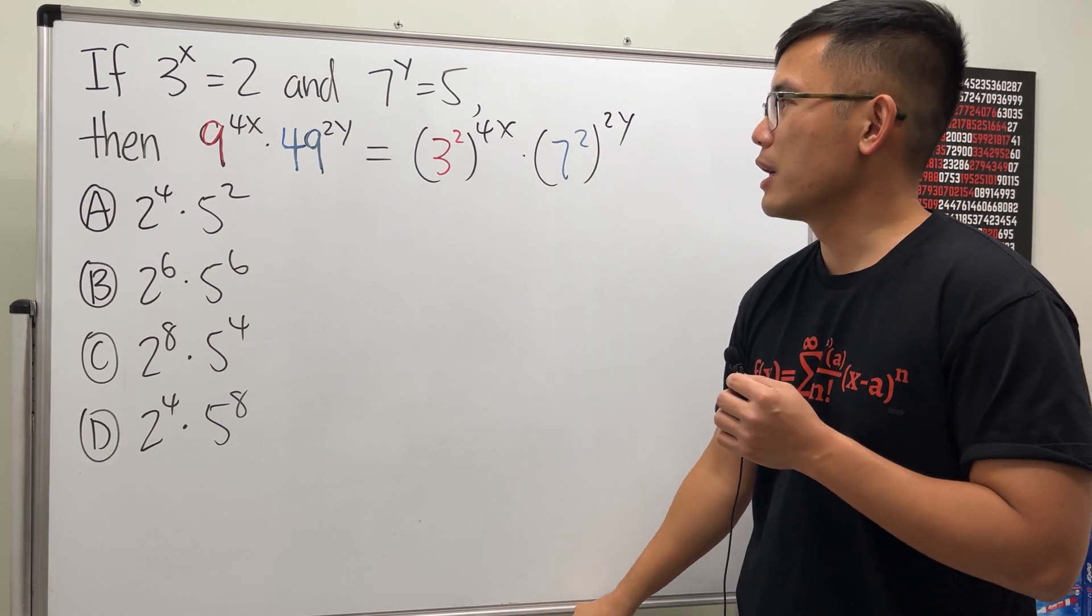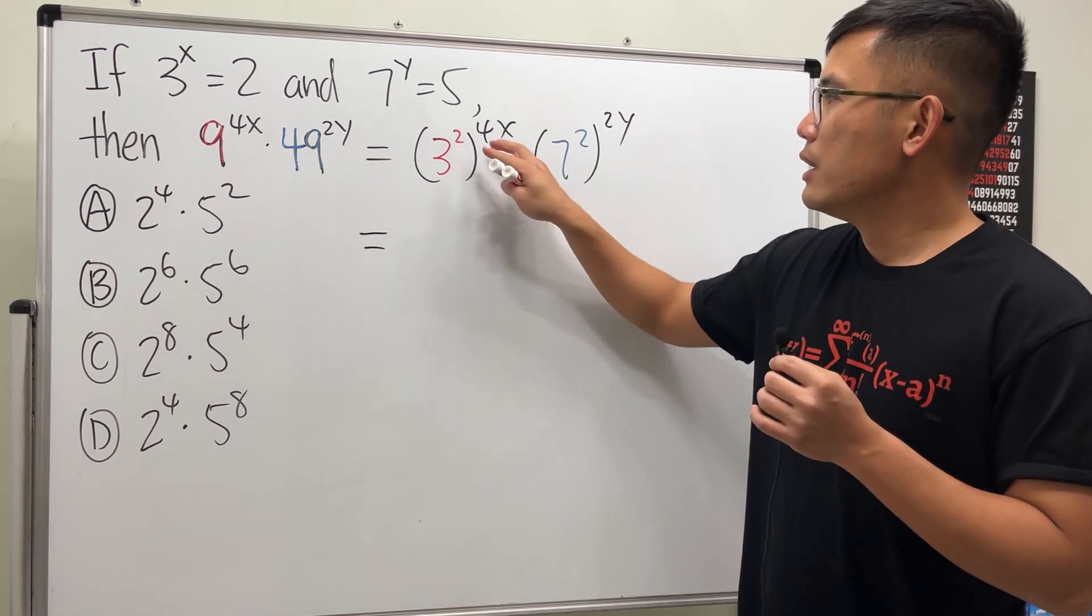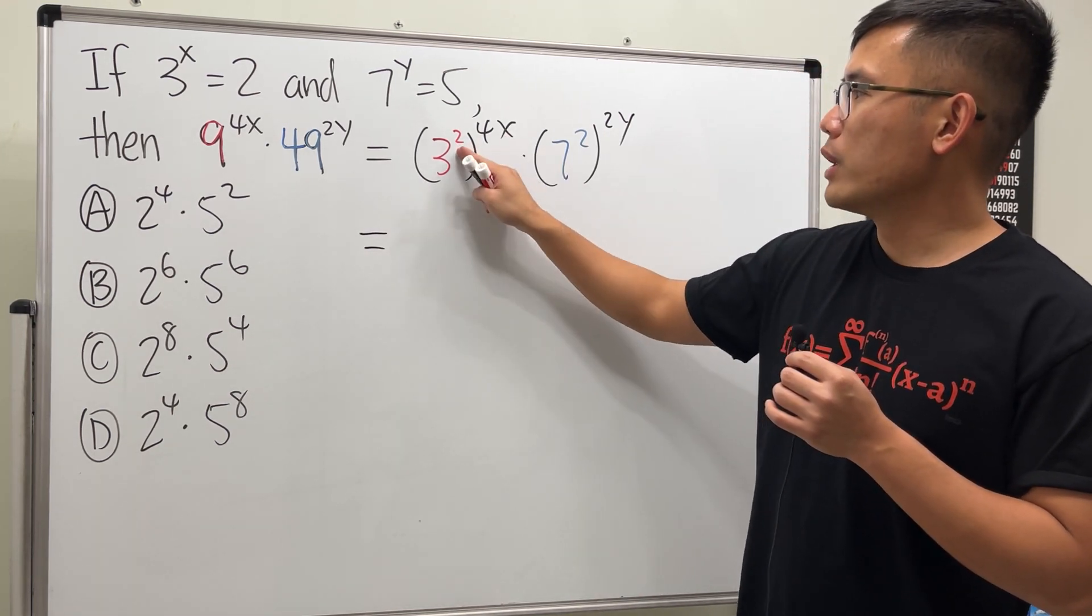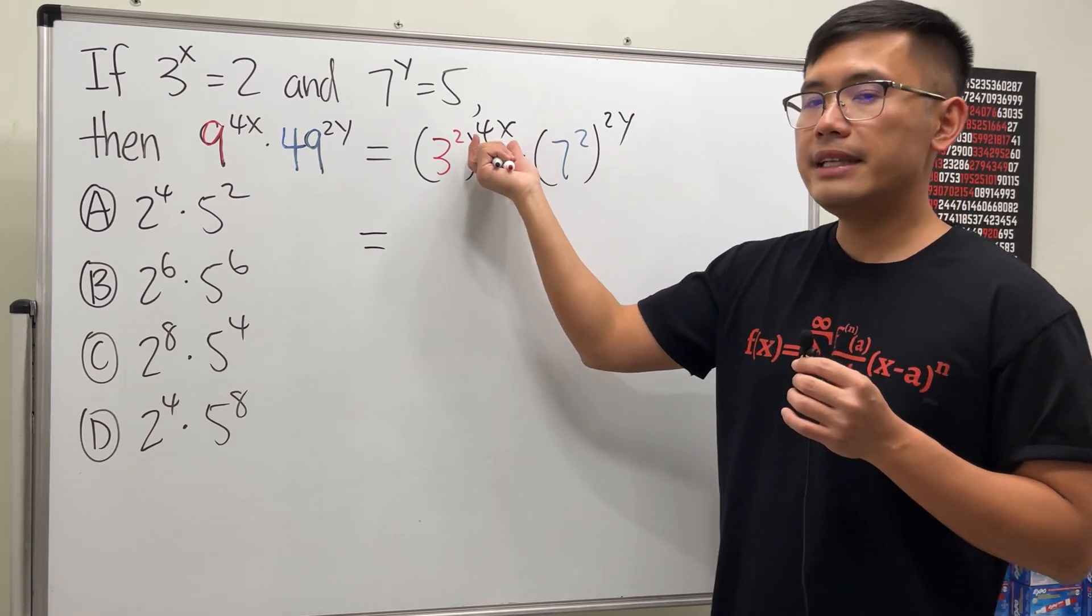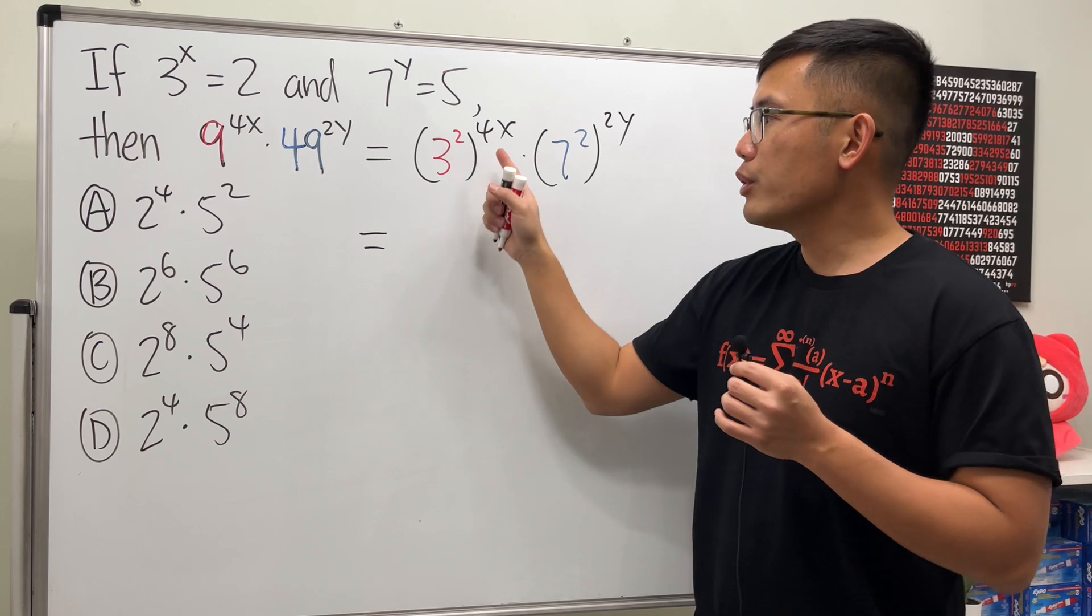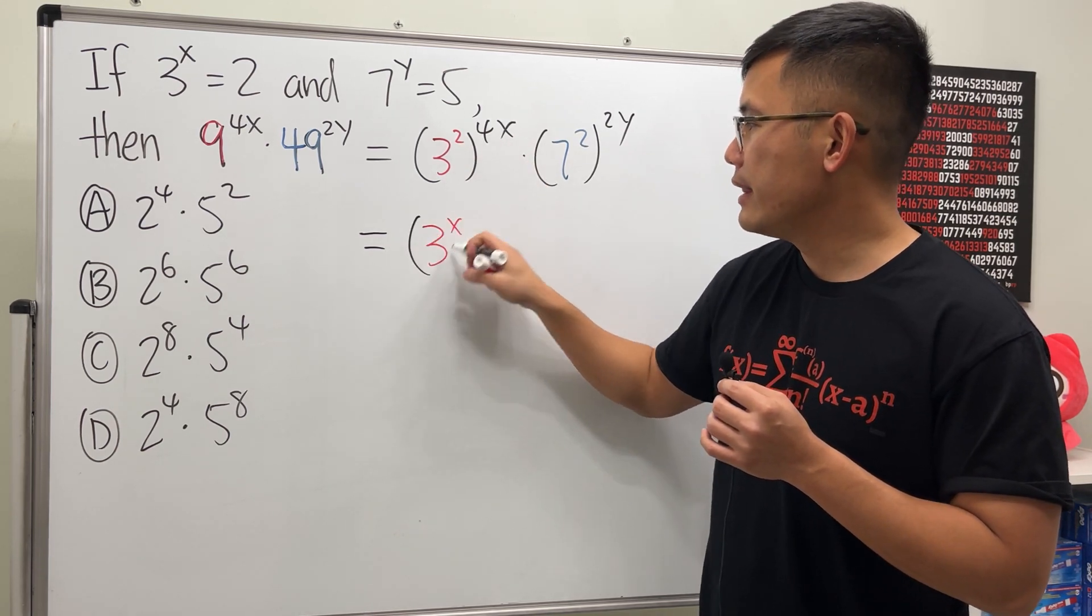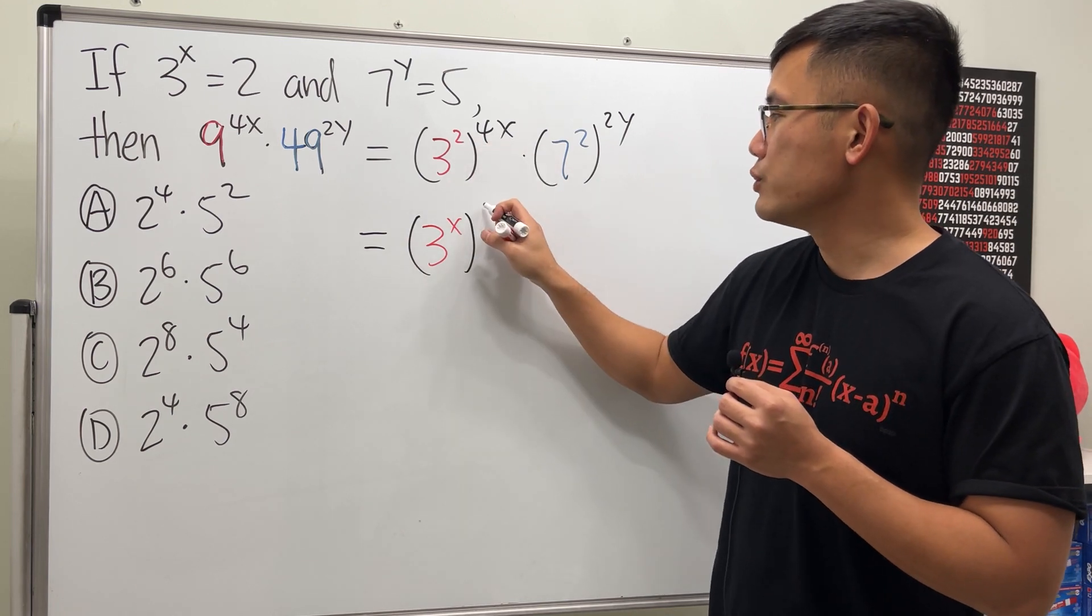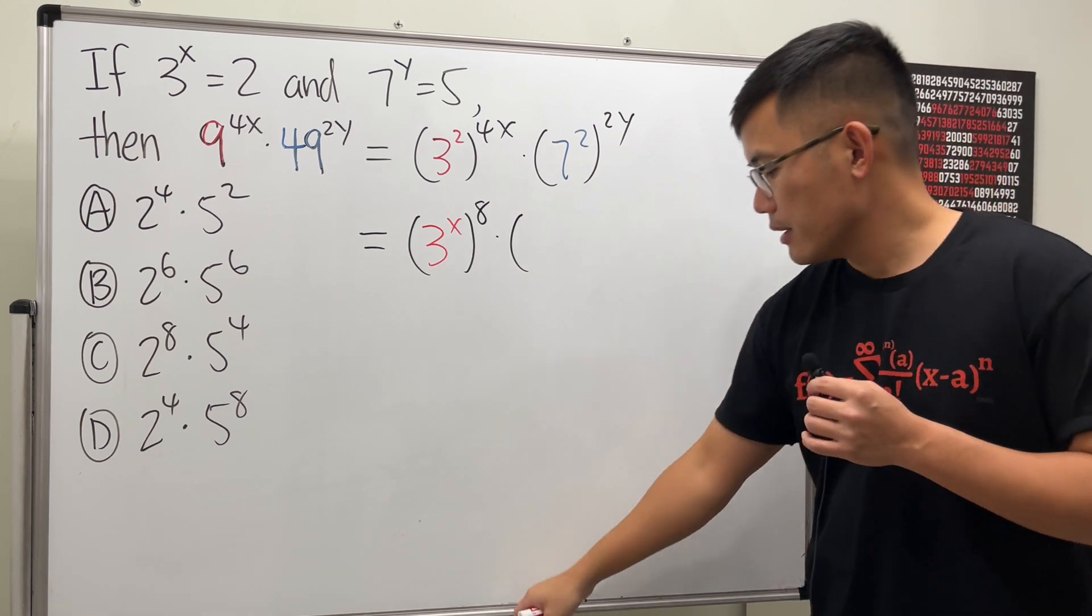Here is where the multiplication comes in. Check this out. What I'm going to do is, because we have a power to a power, we can multiply the powers. So this and that will give us 8x, but I'm going to put the x in, so we look at this as 3 to the x power and then raise to the 2 times 4 which is 8. And then we multiply this by the same thing here. We look at 7 to the y.